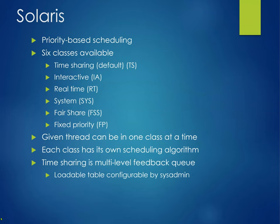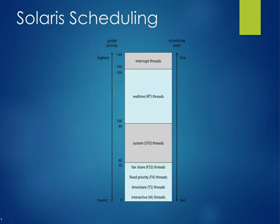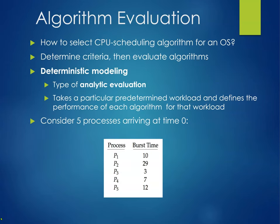Solaris uses priority-based scheduling with six classes available: time sharing, interactive, real time, system, and others. We won't go into too much detail here because Solaris isn't really used anymore. Each thread can be in one class at a time, each class has its own algorithm, and time sharing uses a multi-level feedback schedule.